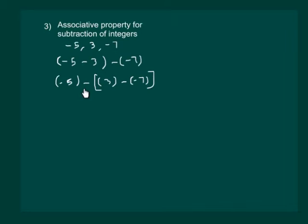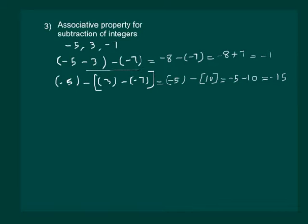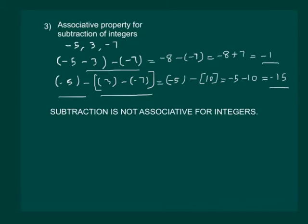Now let us solve this further and check whether the answers are equal. On solving, we get the first grouping equal to minus 1 and the second grouping equal to minus 15, implying that subtraction is not associative for integers.